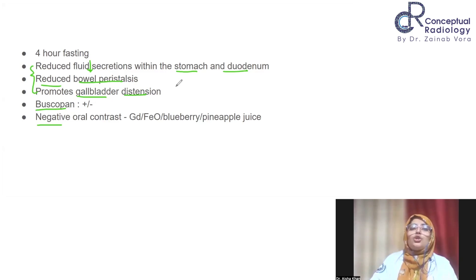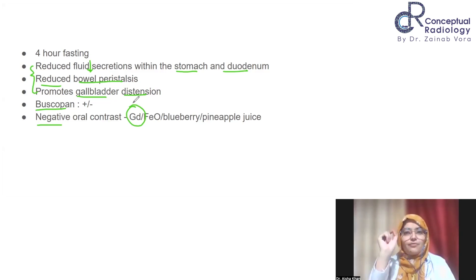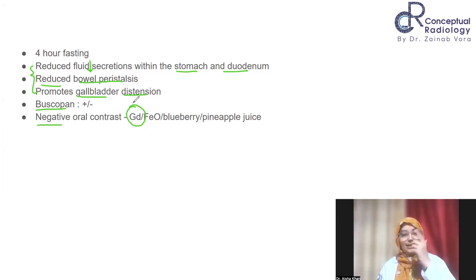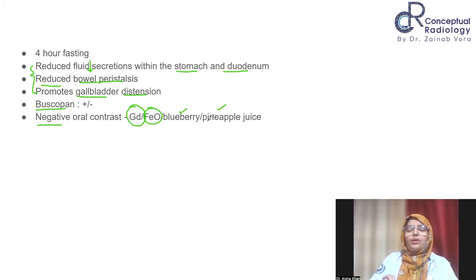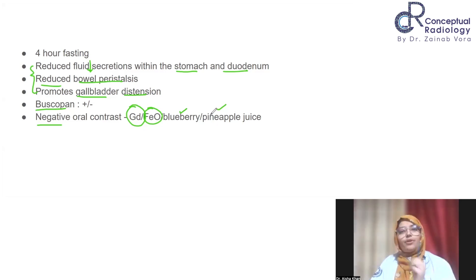For negative oral contrast, gadolinium is very costly especially in government setups, so leftover 0.5–1 ml of gadolinium from vials is diluted with normal saline and used. Alternatively, iron oxide preparations, blueberry juice, pineapple juice, a product called Dextra Orange, or even vanilla ice cream can be used — anything containing iron, manganese, or gadolinium — to act as negative oral contrast and suppress background GIT secretions.